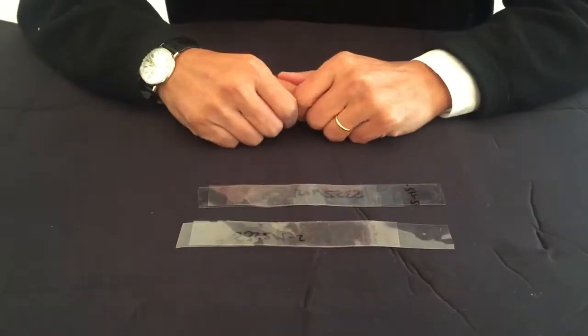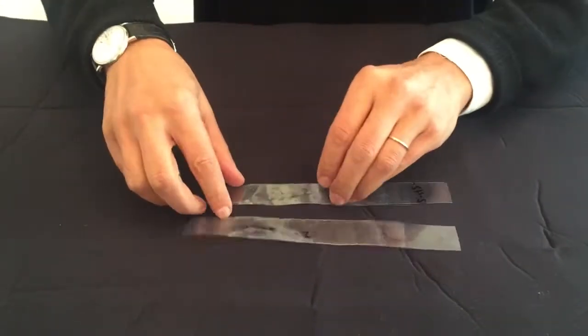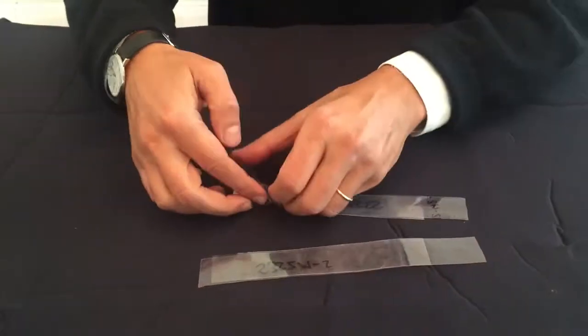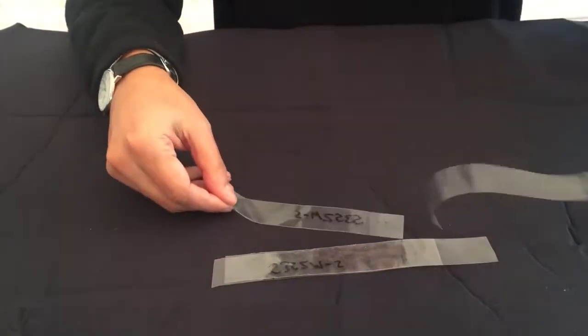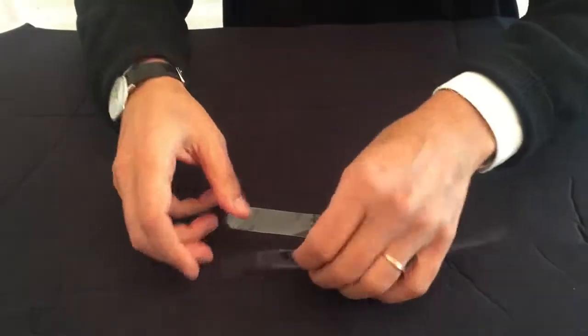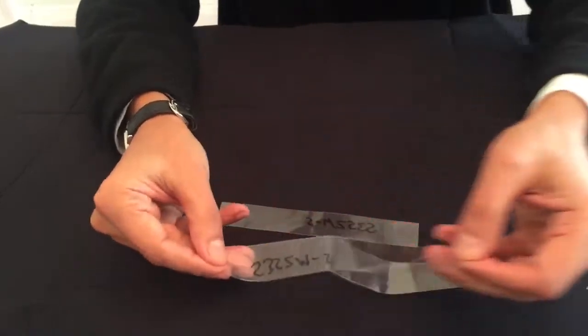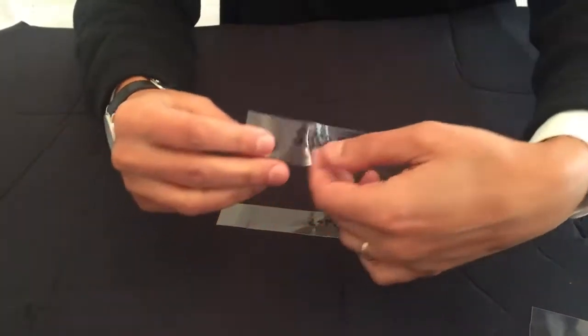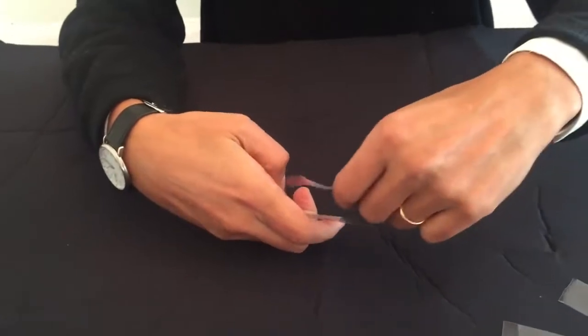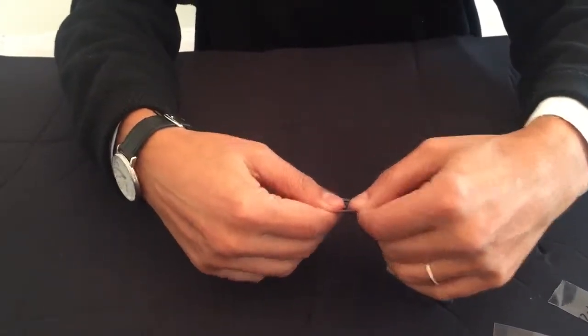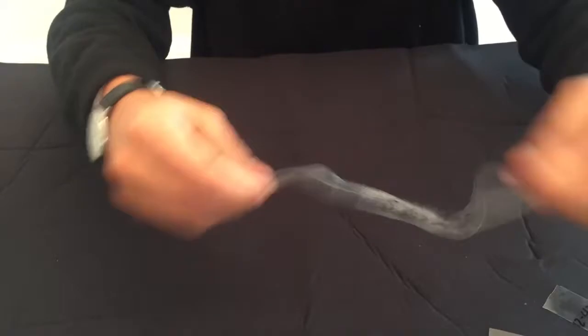We've designed GECKSKIN to attach to itself, which we call GECK on GECK. Here's an example of coated film. I'll peel off the liner, attach the film to another piece of film which is identical, press and pull.